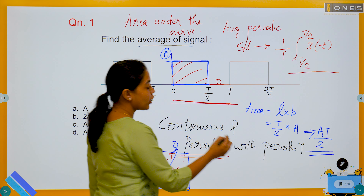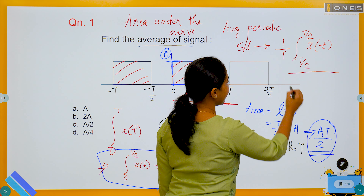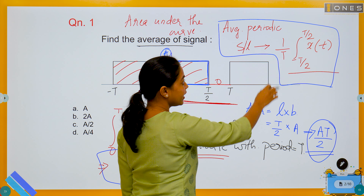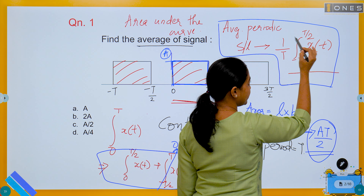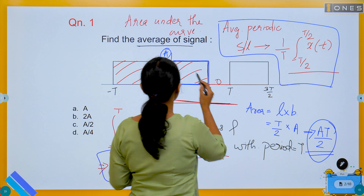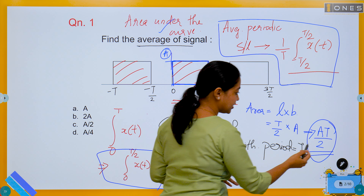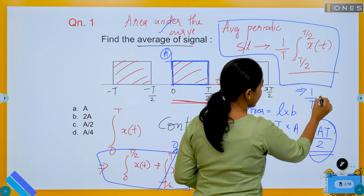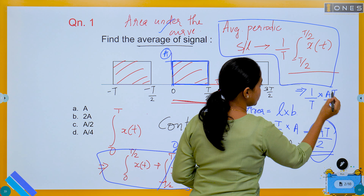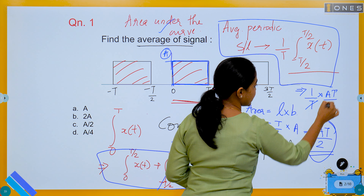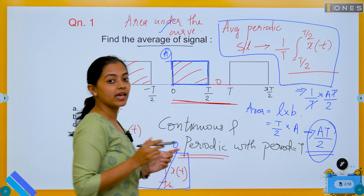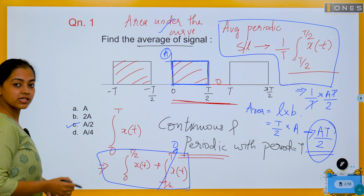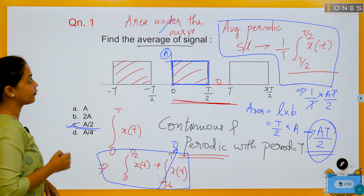Now substitute A×(T/2) into the average equation: average = (1/T) × integral from −T/2 to T/2 of x(t) dt. After substitution, T cancels and the answer is A/2. So this is the answer for this kind of rectangular wave question.